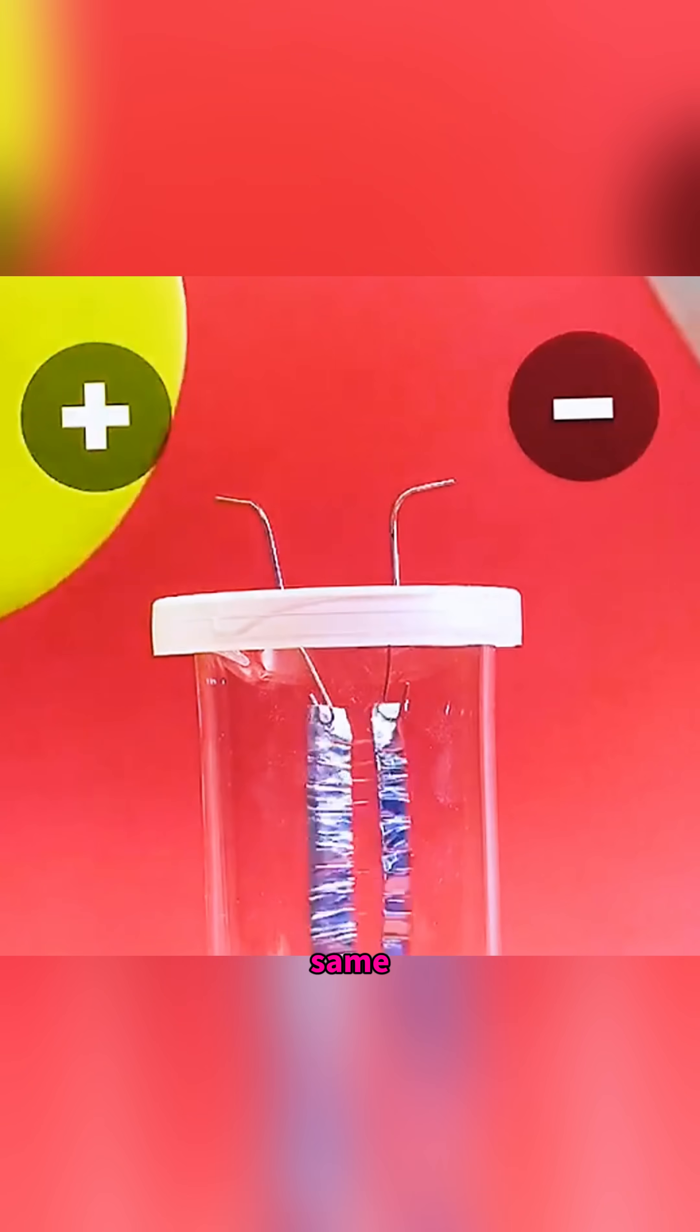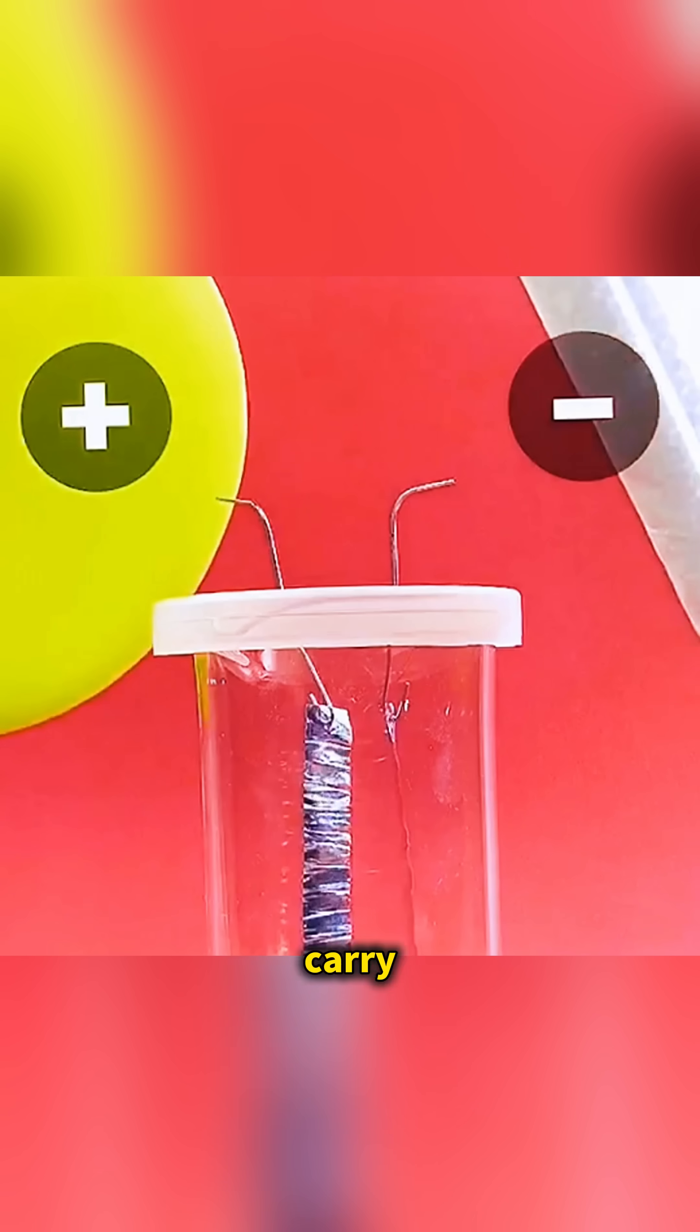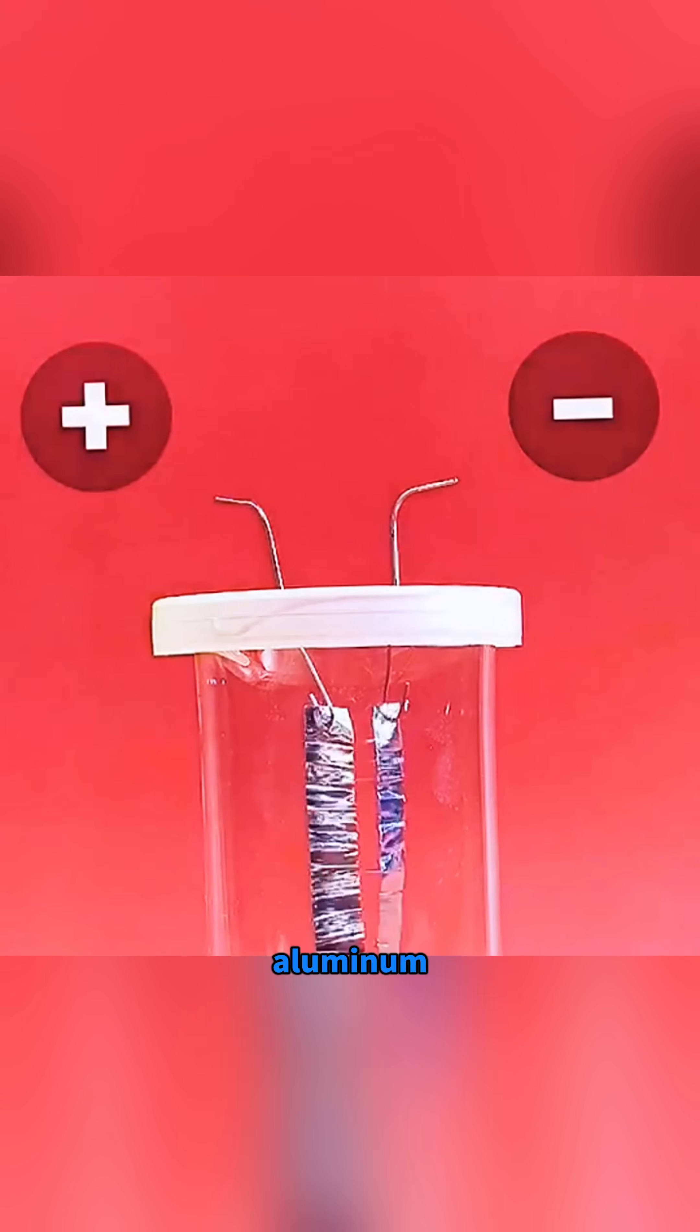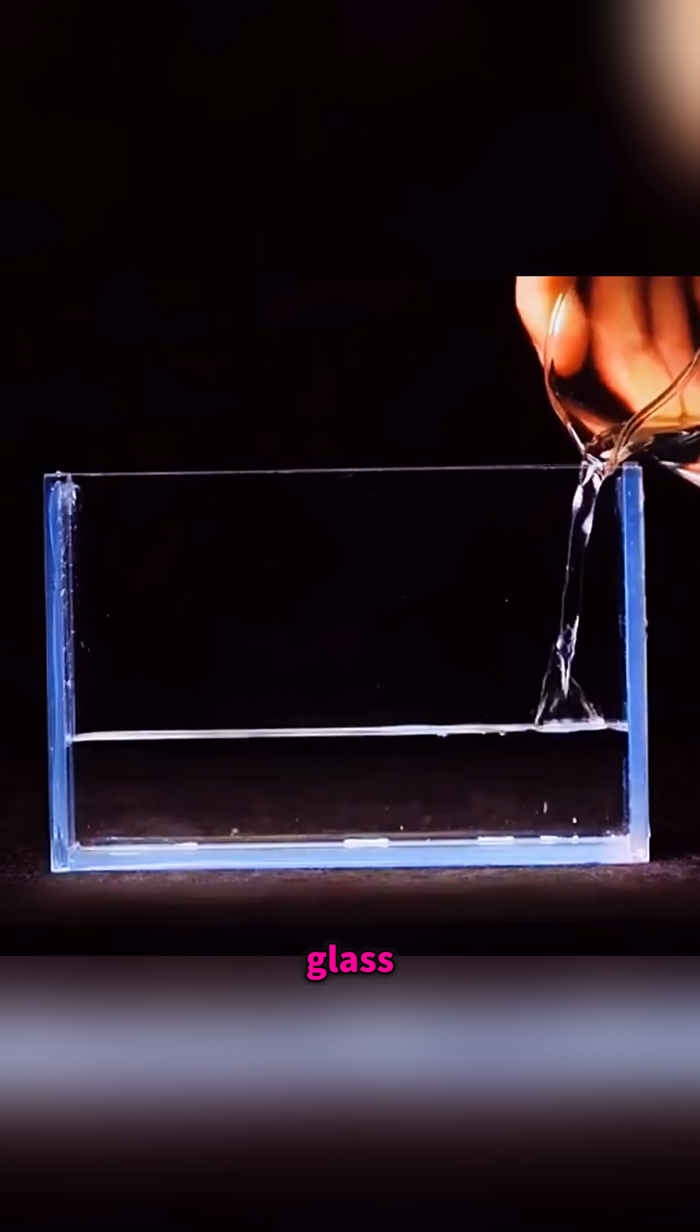The foam board does the same, but when the balloon and foam board approach the wires together, because they carry different charges, the aluminum foils suddenly attract each other.